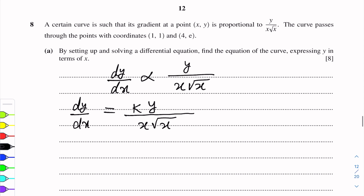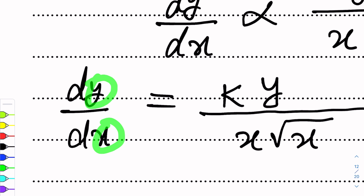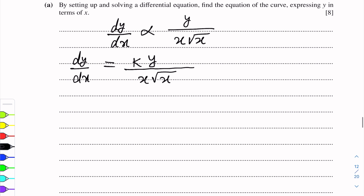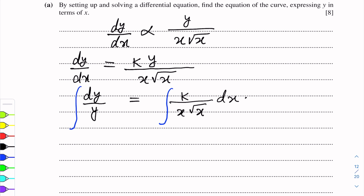Now we will separate the variables. In this question the variables are y and x; y is the dependent variable. By cross-multiplying, we attach y terms with dy and x terms with dx: dy over y = k over x · root x · dx. So dy/y = k · x^(−3/2) dx. Y terms are on the left and x terms are on the right. The second step is to integrate each side with respect to its corresponding variable.